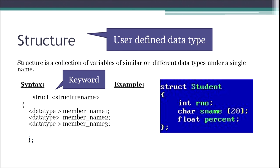As an example, we have created a structure for student which has three data elements: roll number, s_name, and percentage. Roll number is an integer, name is a character array of size 20, and percentage is of type float. So we have three different data types combined under one single name — that is student.